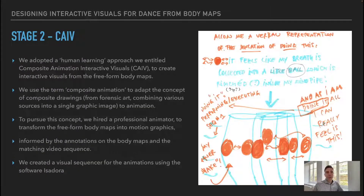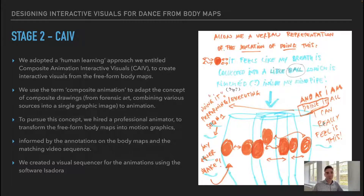Stage 2, CAIV. We adopted a human learning approach we entitled Composite Animation Interactive Visuals, CAIV, to create interactive visuals from the freeform body maps. We used the term composite animation to adapt the concept of composite drawings from forensic art — combining various sources into a single graphic image — to animation. To pursue this concept we hired a professional animator to transform the freeform body maps into motion graphics, informed by the body maps and the matching video sequence. We created a visual sequencer for the animations using the software Isadora.